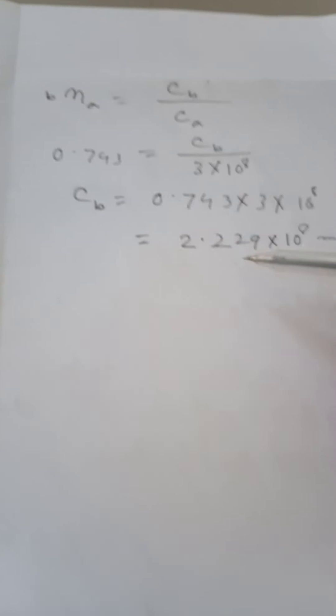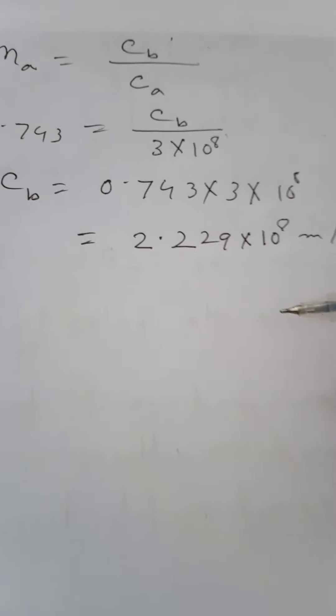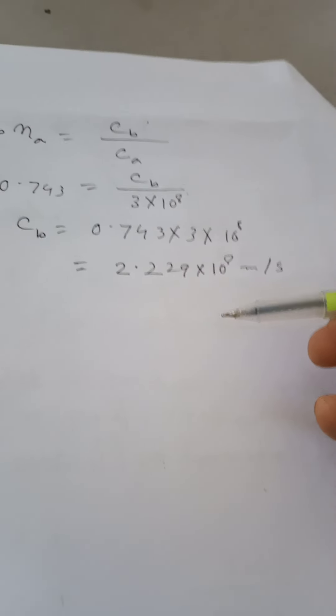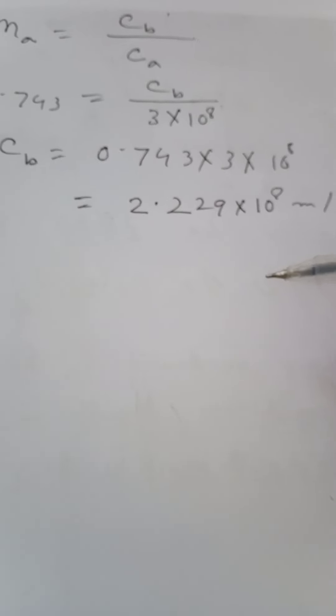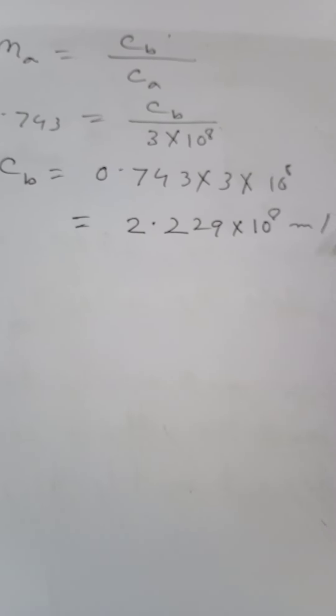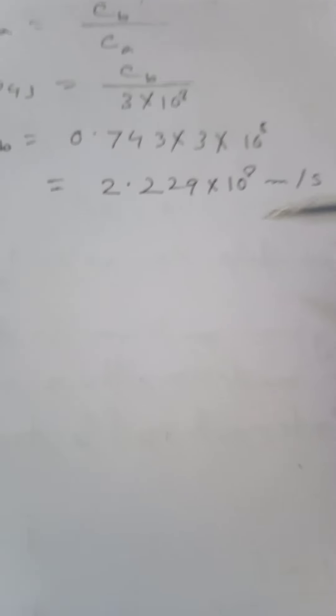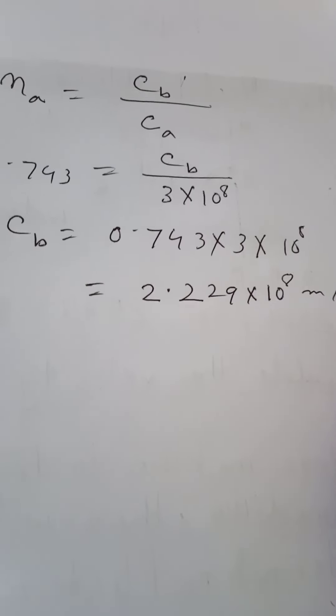First you need to know what total internal reflection is. Total internal reflection means: when light enters from a denser medium to a rarer medium at an angle of incidence greater than the critical angle, no light is refracted — rather all the light is reflected following the rules of reflection. That phenomenon is known as total internal reflection.